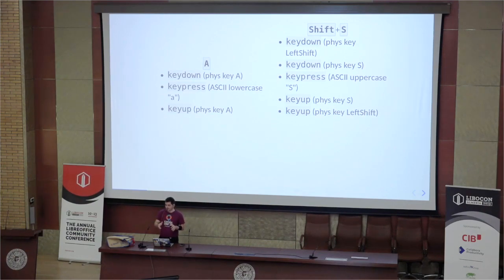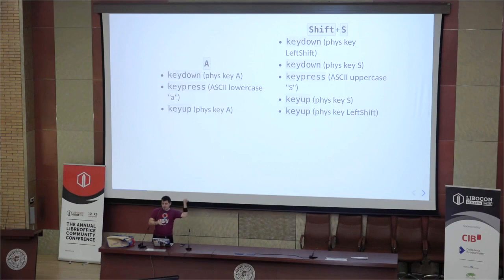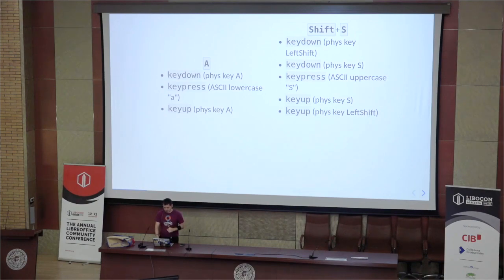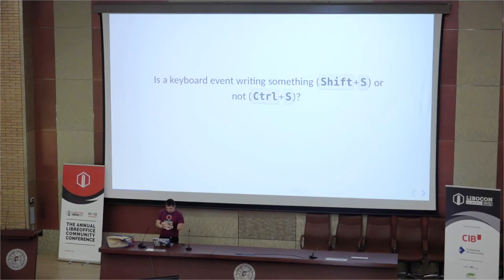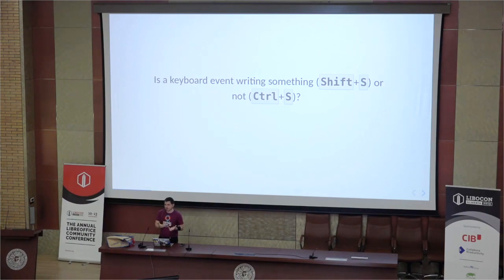If you hold several keys at once, you'll have several key downs, then one key press for the actual characters, then several key ups. The key up events can be switched depending on how fast your fingers are — it usually has no effect. But if you're doing a key combination that doesn't generate a writable character, you should be able to tell that apart, because it's still getting a key press but it's not a printable thing.